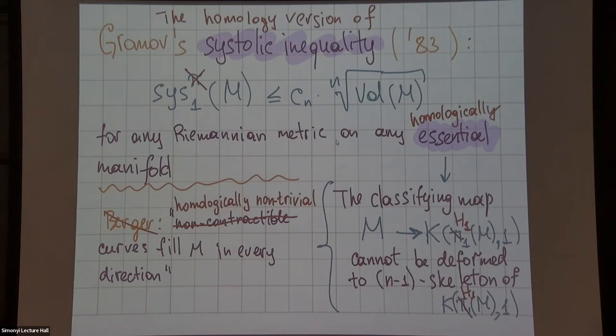Apparently somewhere in Gromov's work you can find the homology version of the same inequality where you bound the bigger quantity. If I consider the homology systole, it can be in general bigger than the homotopy systole, so it still can be bounded by the root of the volume if you replace the assumption by something pretty much the same.